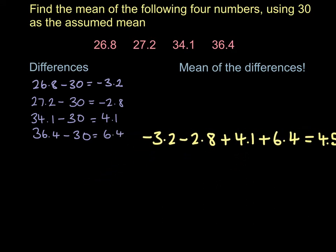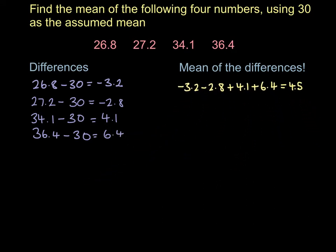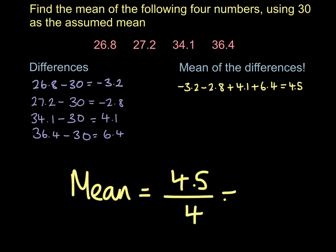So the total of the four numbers is 4.5. To find the mean of the four numbers, we now take that total and divide it by 4. So the mean of the differences is going to be 4.5 divided by 4, which is 1.125.